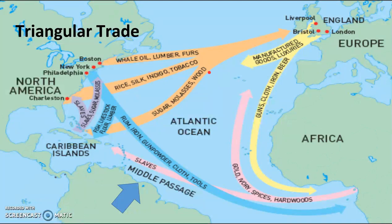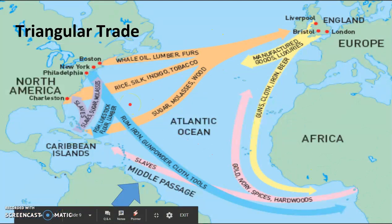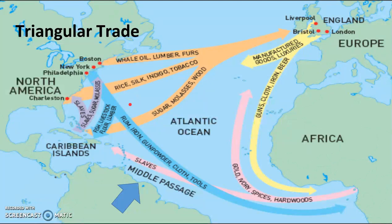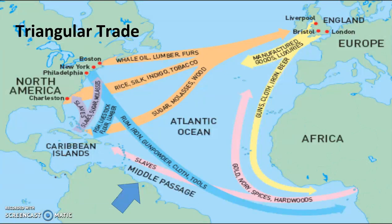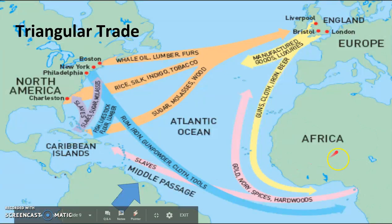The last thing we need to talk about is the Middle Passage. We've talked about triangular trade already and how that's what mercantilism actually looked like in the real world. The Middle Passage is the second of the three routes: Route 1 is Europe to Africa, Route 2 is Africa to the Americas, and Route 3 is the Americas to Europe. So the Middle Passage is the second one — it is the passage that enslaved Africans took to the New World, involuntarily.